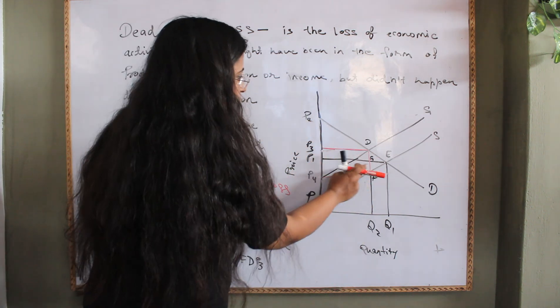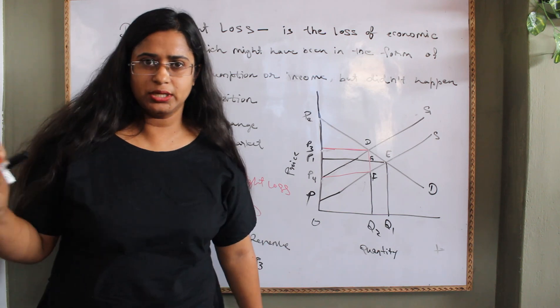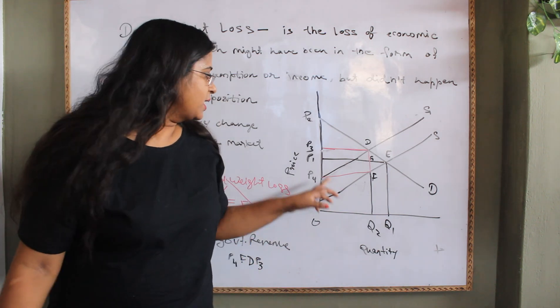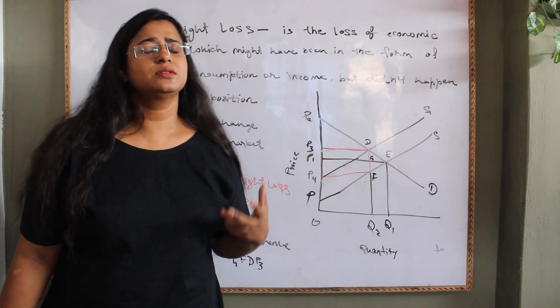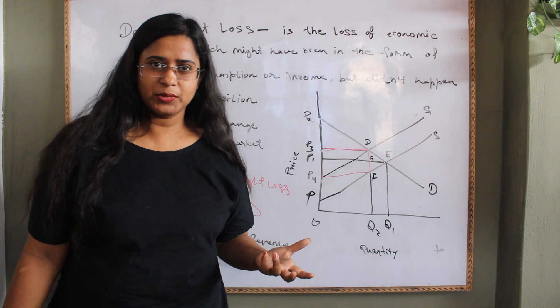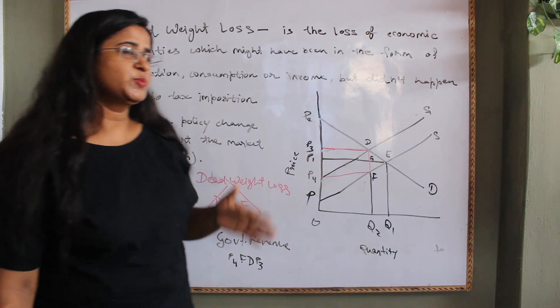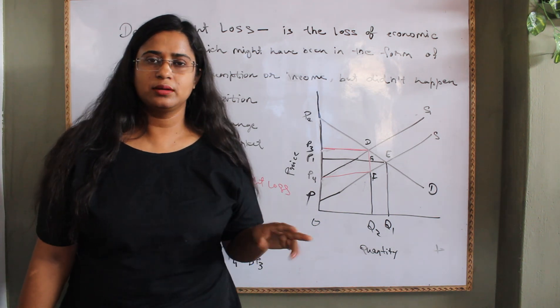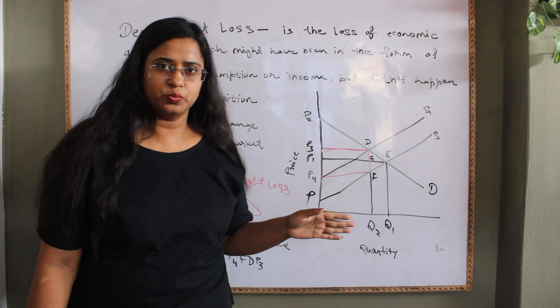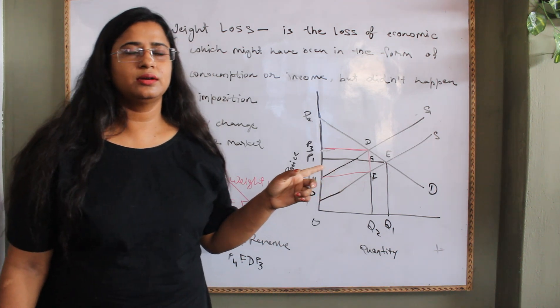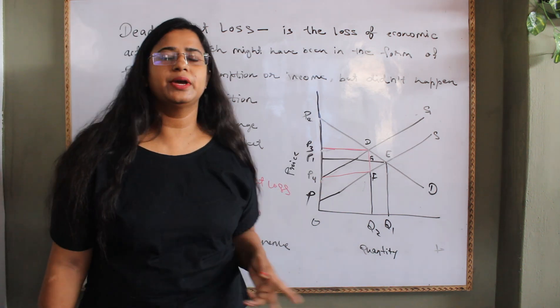This area P1GDP3 is the part of the consumer surplus which is going to the government. That means that burden of taxation has been split into two parts. A part is extracted from the consumer, that means the producer has shifted its tax burden, and a part is paid by the producer himself.